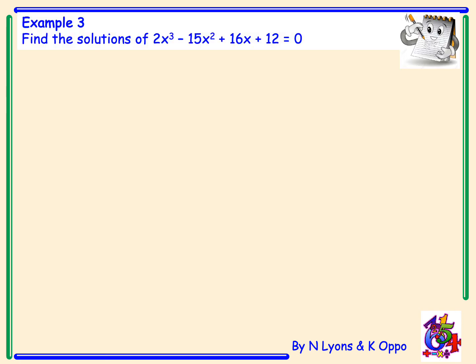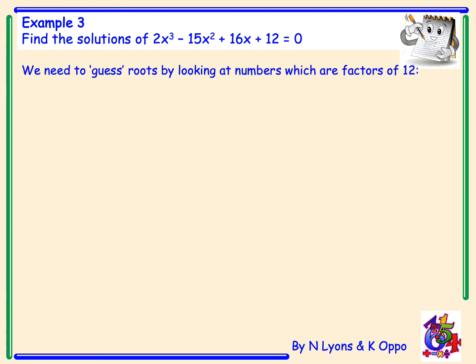Example 3. Find the solutions of 2x³ - 15x² + 16x + 12 = 0. In order to find solutions, we must factorise first. To factorise, we use synthetic division; however, we do not know any factors, so we need to guess roots by looking at numbers which are factors of the last coefficient, 12.